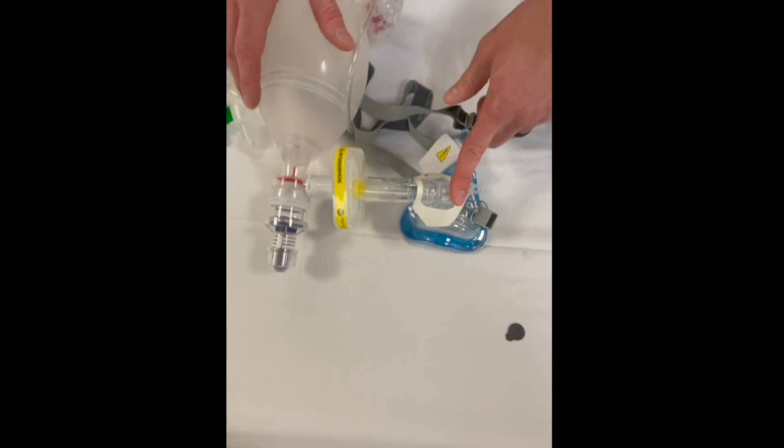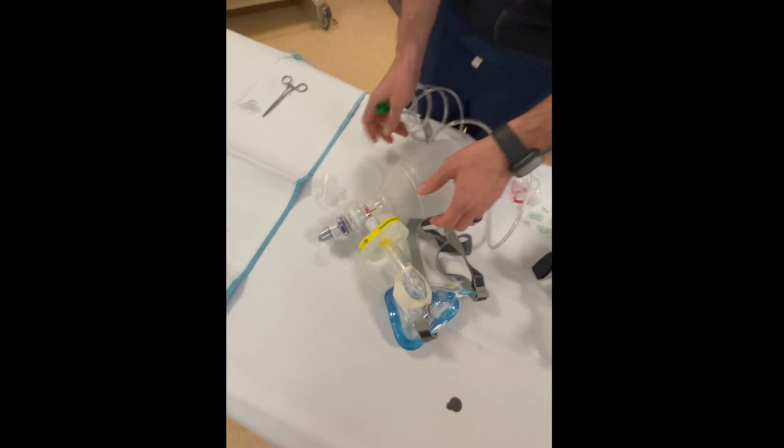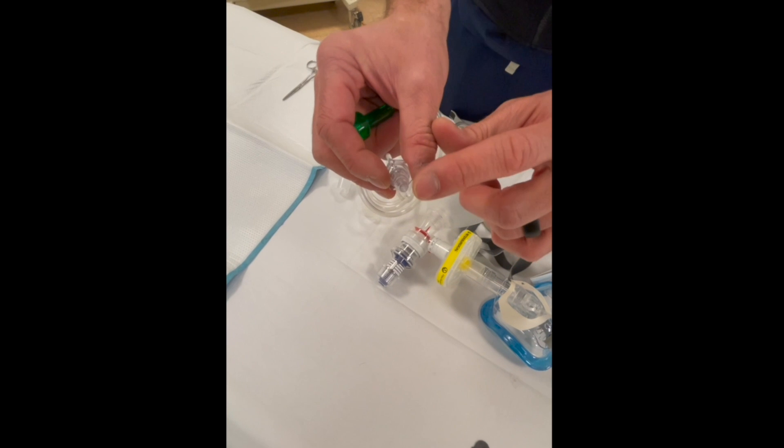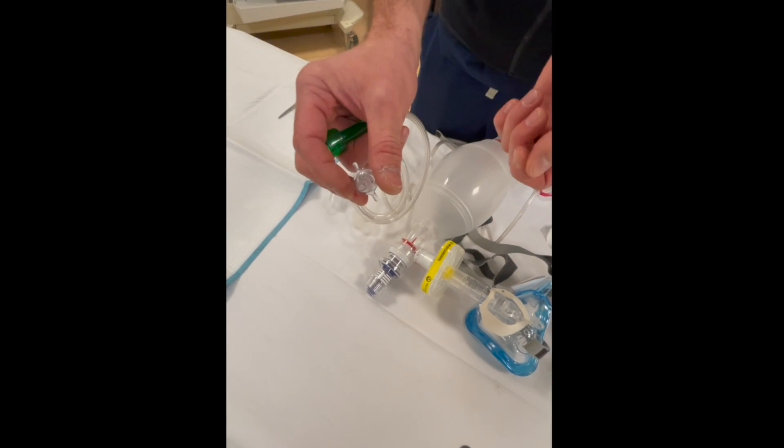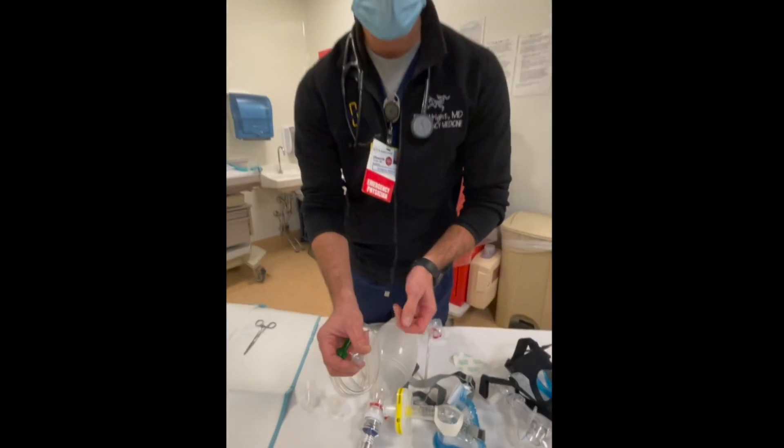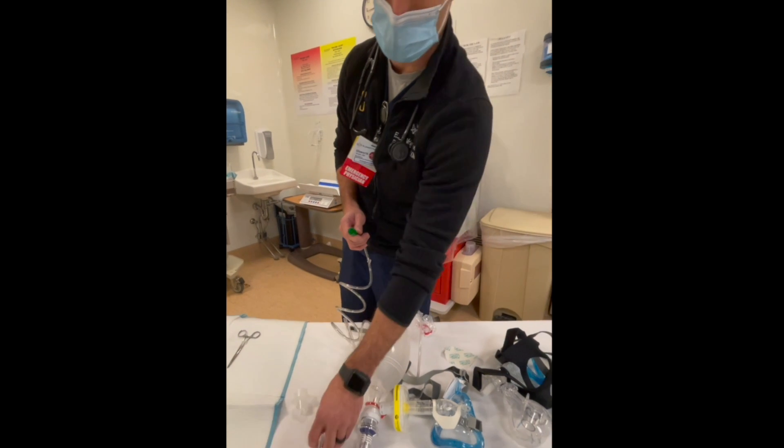After we hook this up, we are going to hook it up to oxygen. I actually like to take the Christmas tree off because it's going to decrease our flow. Most of the time we're going to put this on flush rate, so we're trying to get the most amount of mean airway pressure that we can.